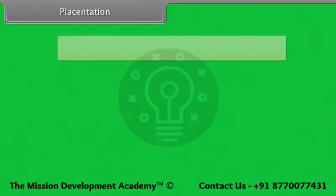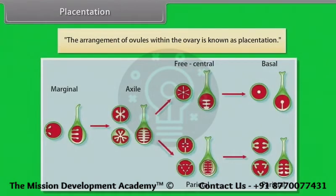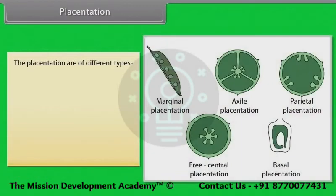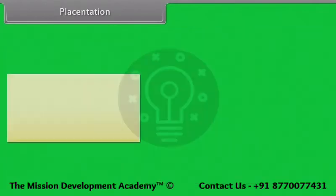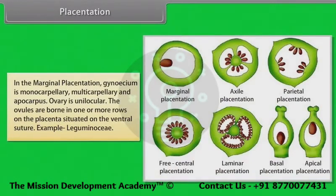Placentation is the arrangement of ovules within the ovary. The types of placentation are: marginal, axile, parietal, basal, free central, and superficial. In marginal placentation, the gynoecium is monocarpellary and apocarpous, the ovary is unilocular, and ovules are borne in one or more rows on the placenta situated on the ventral suture. Example: Leguminosae.